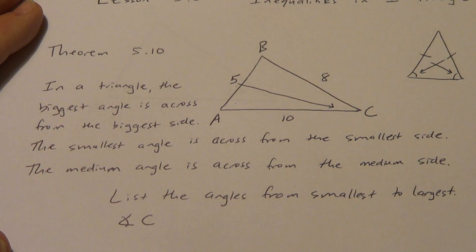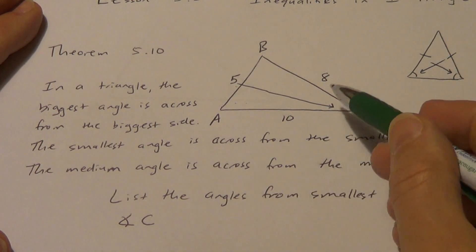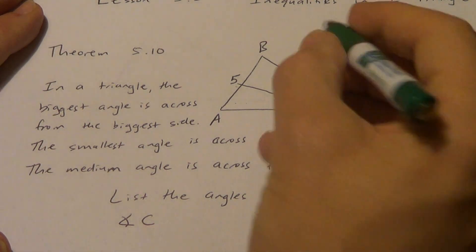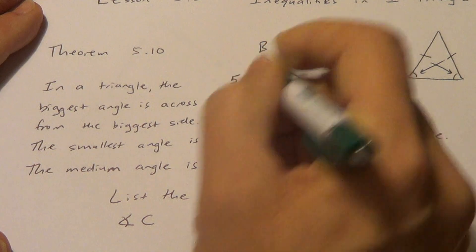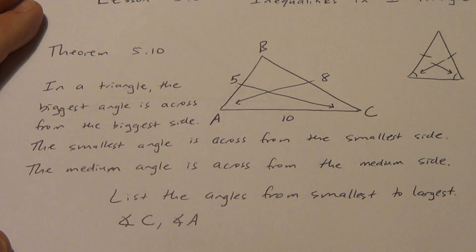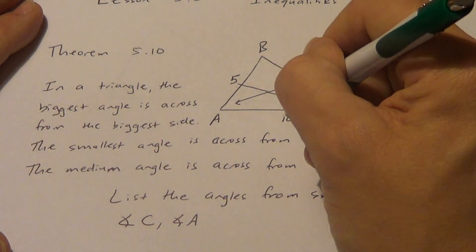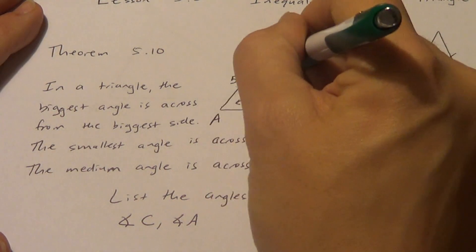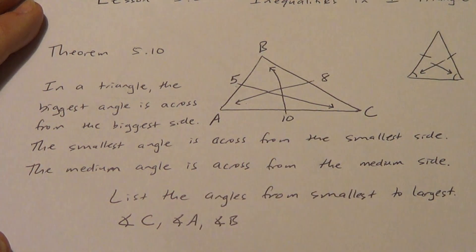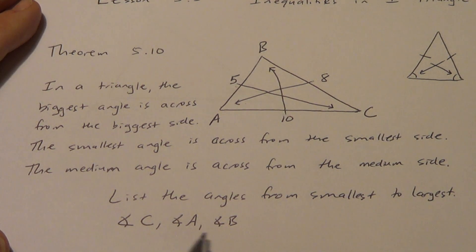Now which side is the medium side? Definitely the 8. We work our way across from the 8 and that takes us over to angle A. And the biggest side is 10, so that works us across to angle B. So angle C is the smallest, angle A is in the middle, and angle B is the biggest.